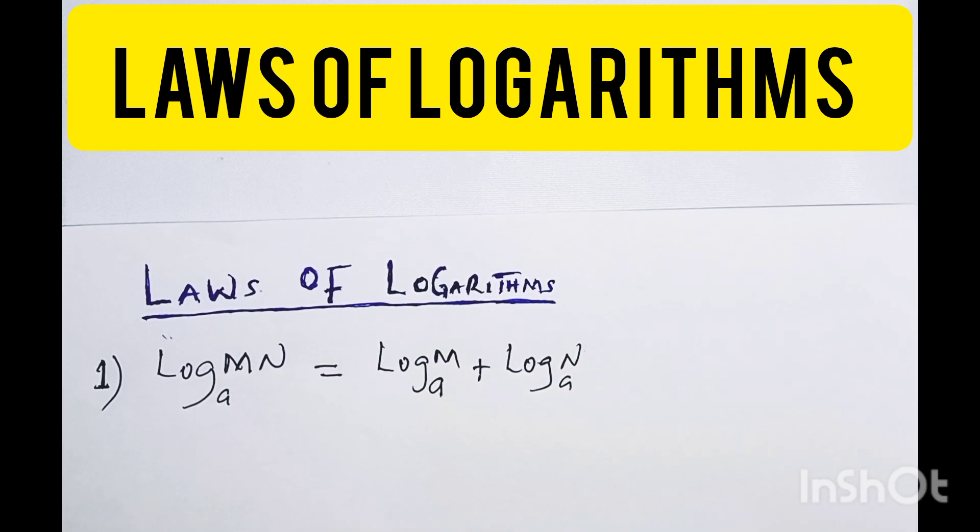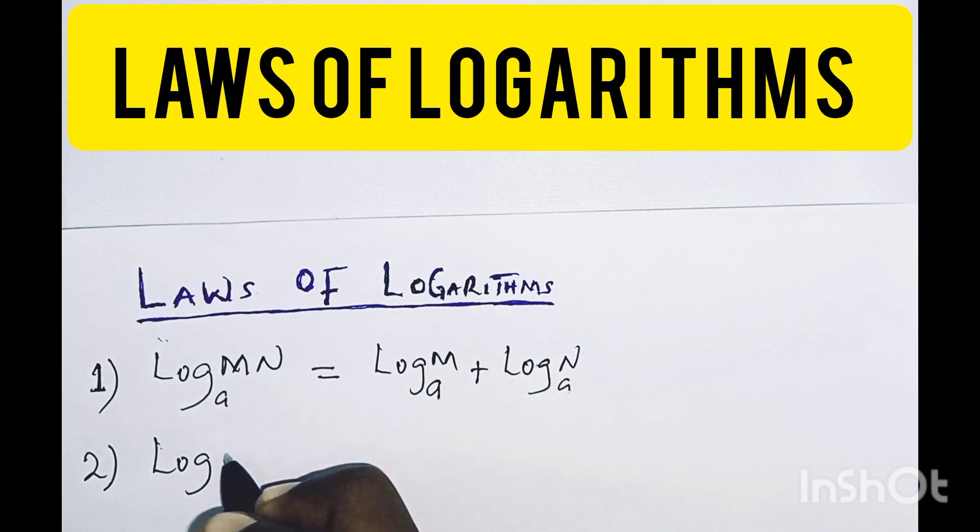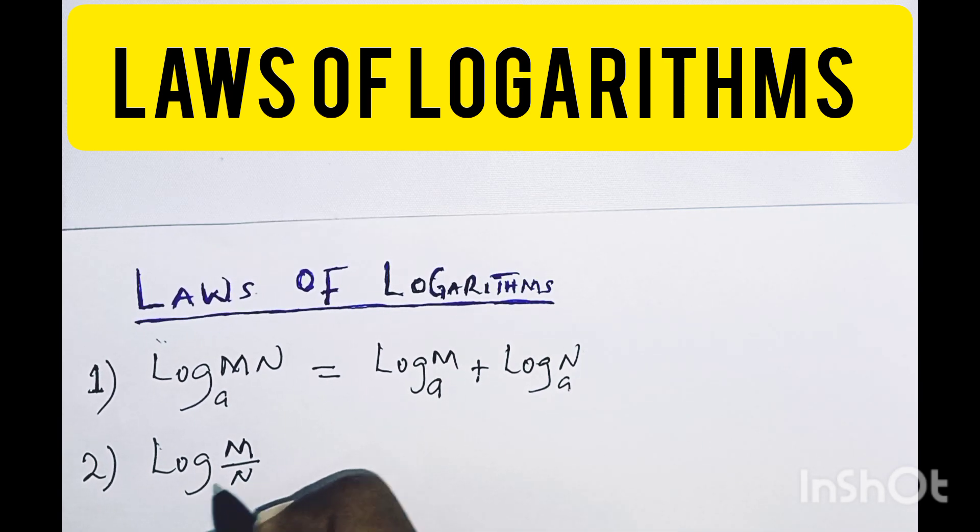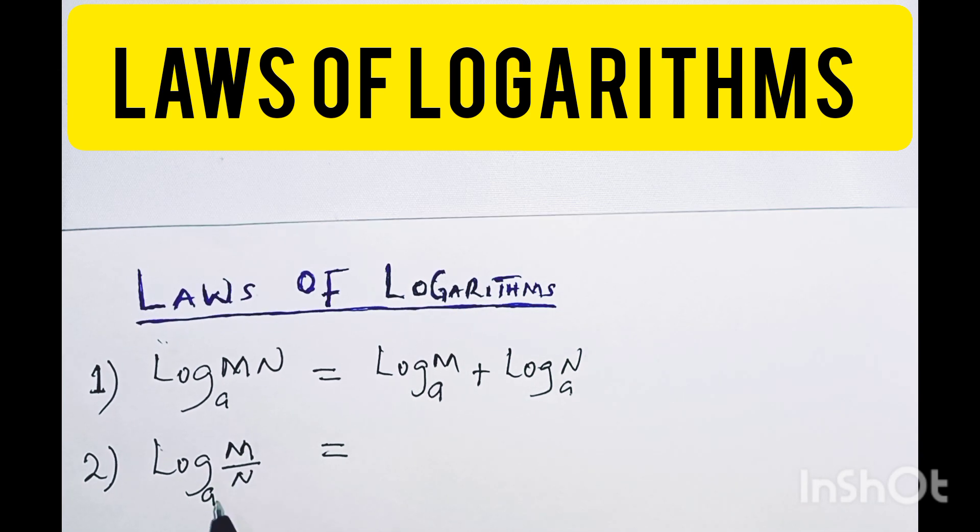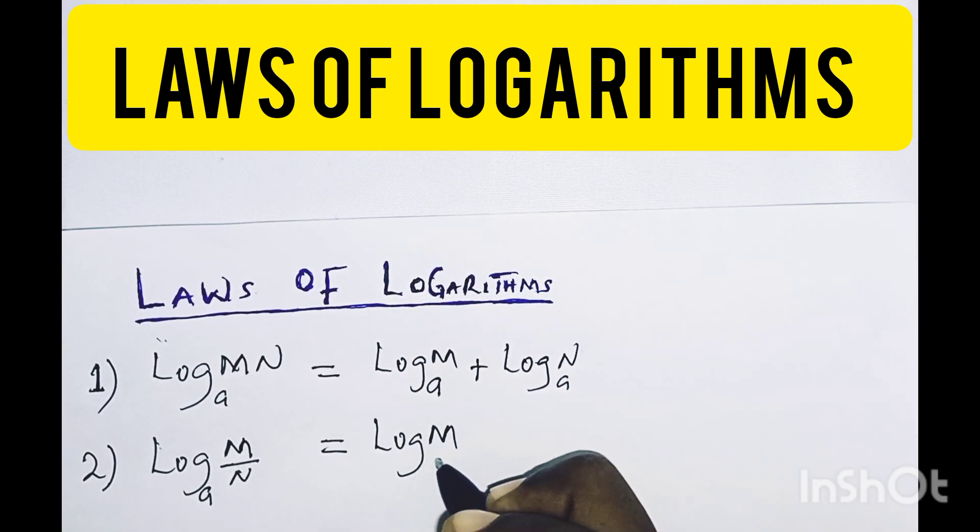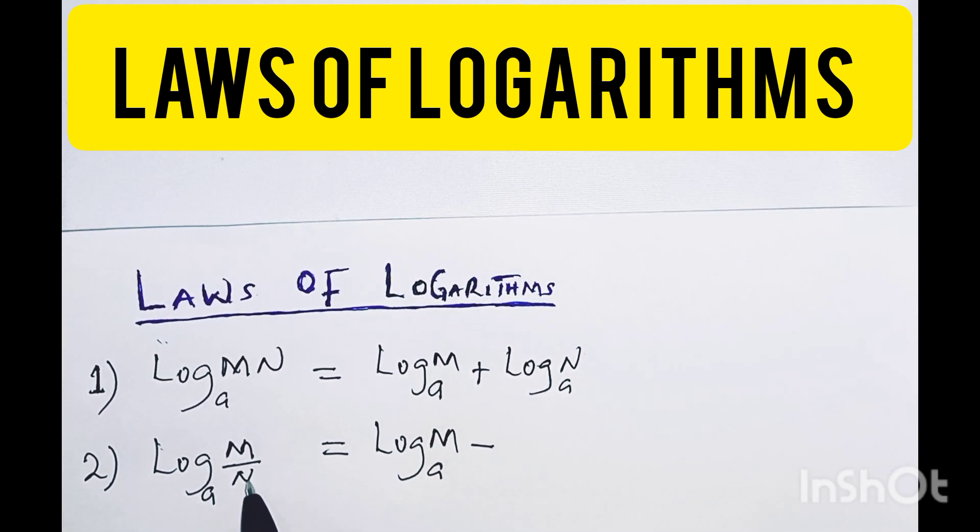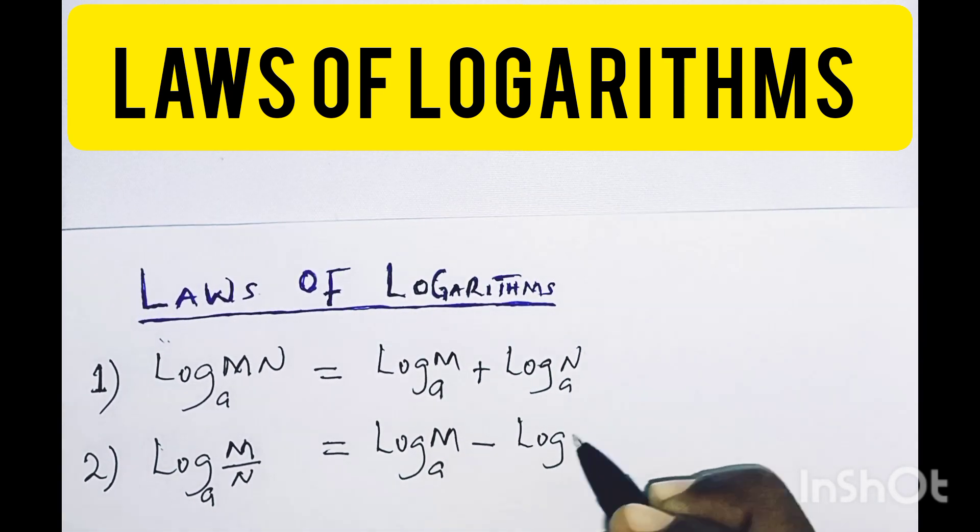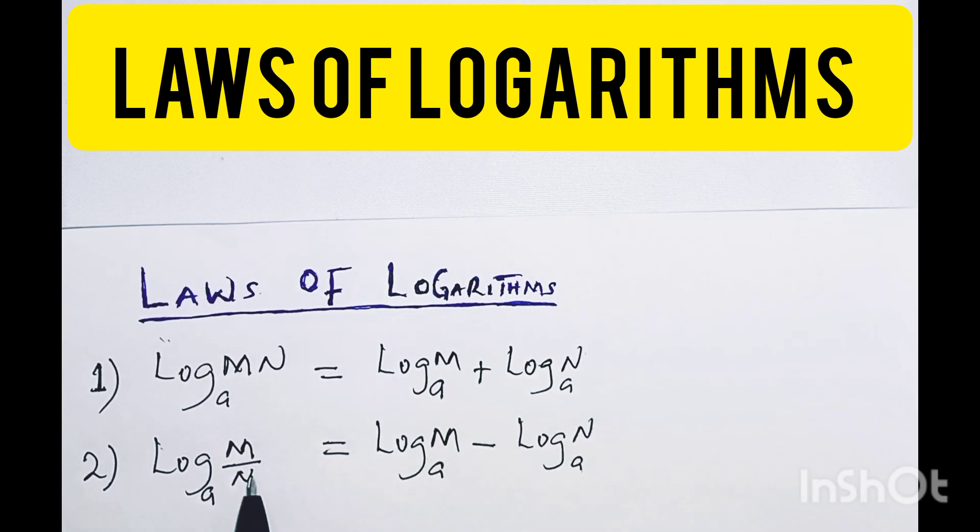Then we have the second law, which is called divisional law. If you have log base a of M over N, according to laws of logarithm, you are going to take log M base a. Now instead of division, you combine it to subtraction, minus log N base a. This is the second law of logarithm, which is called division law. When it is multiplication, you change it to addition. When it is division, you change it to subtraction.